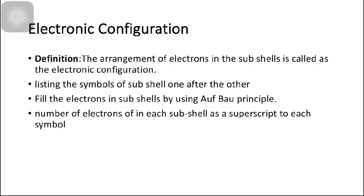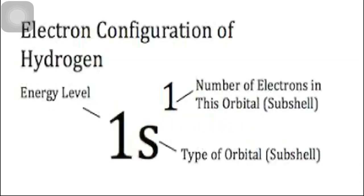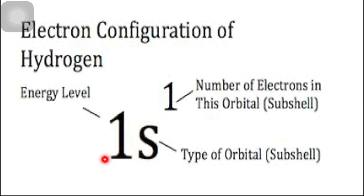Next is electronic configuration. The arrangement of electrons in sub-shells is called electronic configuration, and we do this by listing the symbols of sub-shells one after the other. The sub-shell symbols are S, P, D, and F, and the number of electrons in each sub-shell is shown as a superscript. For hydrogen, with atomic number 1, the single electron occupies the lowest energy sub-shell 1S, giving the electronic configuration 1S¹.